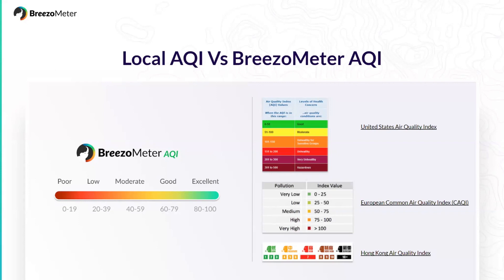The problem is that each country has a different way to do that. The thresholds are different, and some of them are ascending and some of them are descending. For example, in the U.S. 500 is hazardous — bad air quality — while others have high numbers meaning good air quality. So if I want to know how the air quality in New York compares to Beijing, there is no easy way to do that. If you don't compare concentrations, you can't really do that. The air quality index is very different in China and in the U.S. — like speaking two different languages.